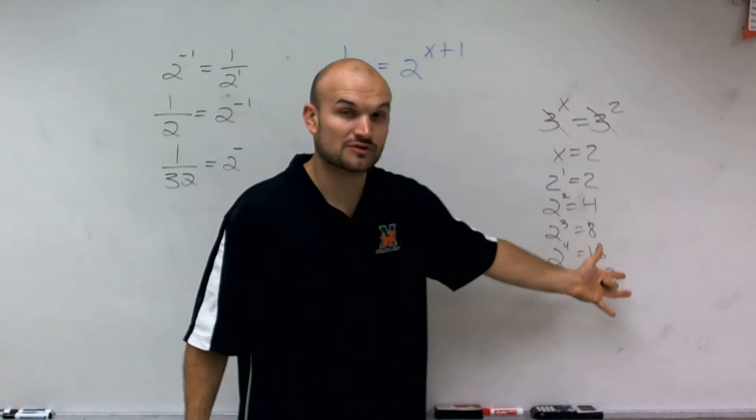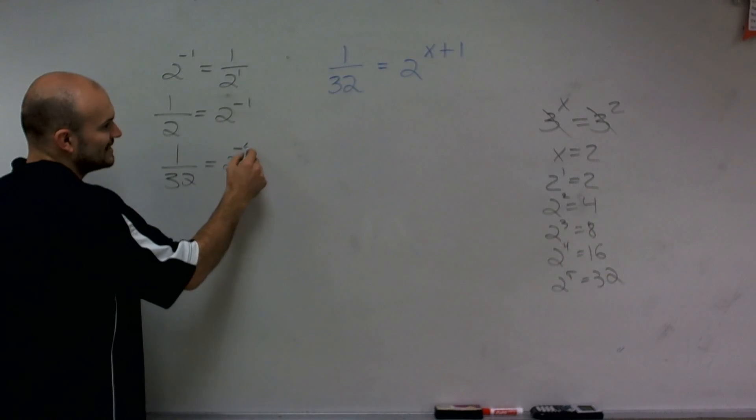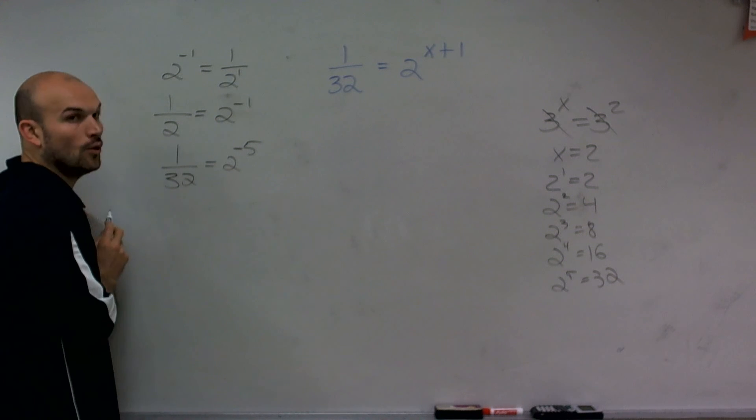But notice, 2 to the fifth equals 32, so if I did 2 to the negative fifth, that's going to equal 1 over 32.